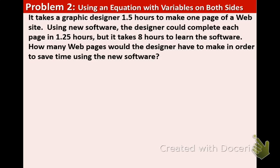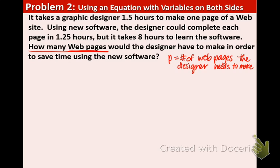So what we need to do is set up an equation. And remember, I have mentioned this before. We need to identify or define our variable first. And you always do that by looking at the question at the end. How many web pages? That's what we're looking for. How many? So we're going to say P = number of web pages the designer needs to make in order for them to be equal to each other.